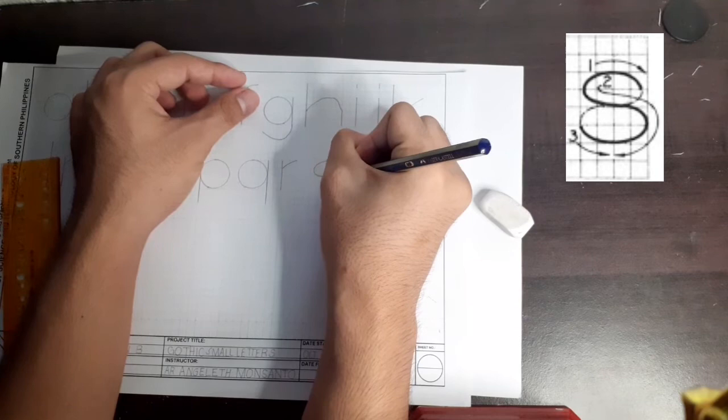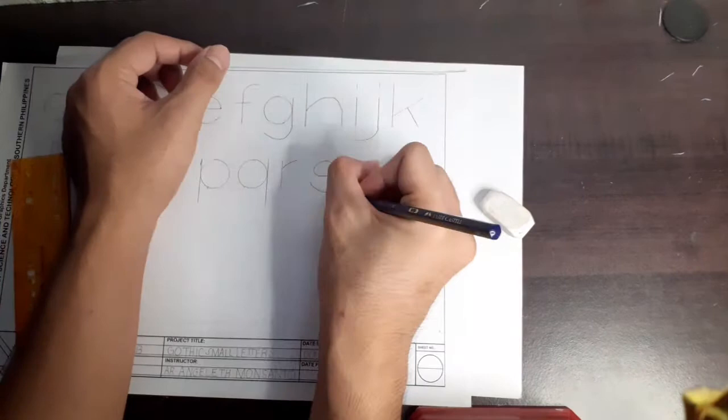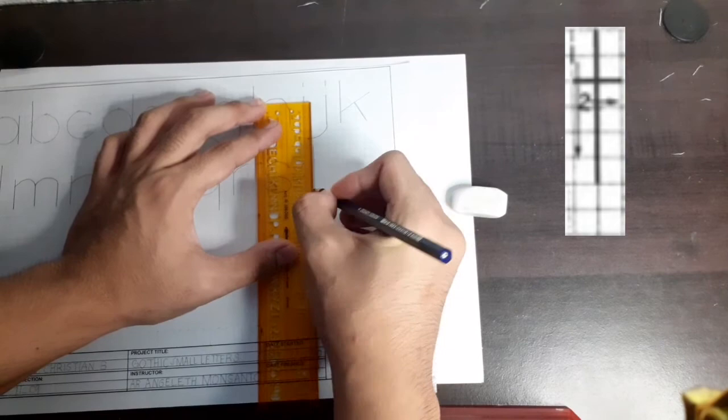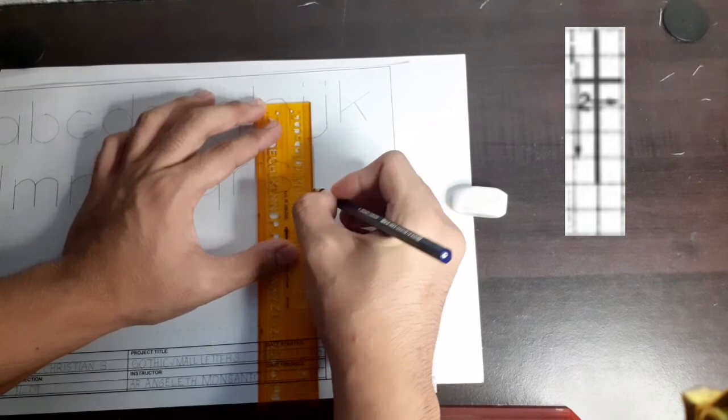Letter S is different. We have to write it in free hand. Just make sure that you have copied clearly what is in the picture. For letter T, it's just a vertical line going downwards, and a straight horizontal line from left to right.